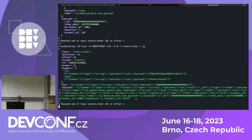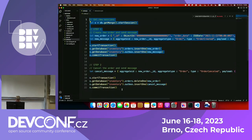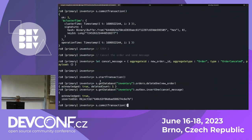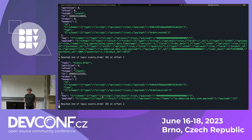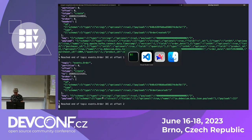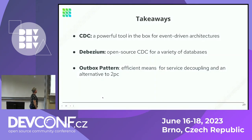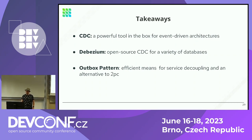If we were to cancel the same order, we can see that we've received another message, and in this case the payload is empty because we haven't stored any data — we are just canceling the order. The takeaways from this talk: CDC is a quite useful tool in event-driven architectures; Debezium is a project that provides the means to employ Change Data Capture; and the Outbox pattern provides an efficient means for microservices to reliably exchange data and is an alternative to distributed transactions and two-phase commit.